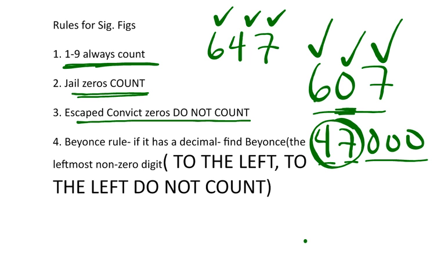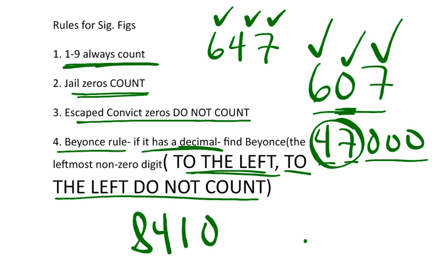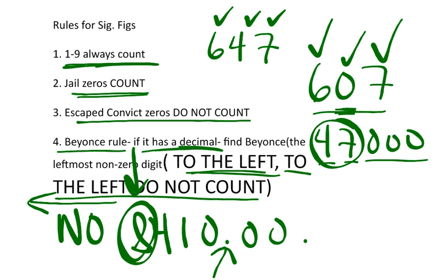And the way it works is, if it has a decimal, we call it the Beyonce rule, famous for her song, to the left, to the left. We apply that because we know the zeros to the left of Beyonce do not count. What do I mean by Beyonce? Beyonce is always, when you look at a number with a decimal, the leftmost non-zero digit. So, for example, if I told you I had 8,410.00, note the decimal right there. As soon as I see a decimal, I look for Beyonce, the leftmost non-zero number. That's going to be eight, so eight is Beyonce. Anything to the left, to the left, to the left, does not count. Anything to the right, yes. So that means the eight, the four, and the one automatically counted. The zero, that zero, and that zero count, so you would say that that has six significant figures.